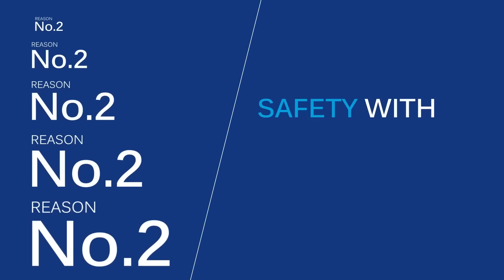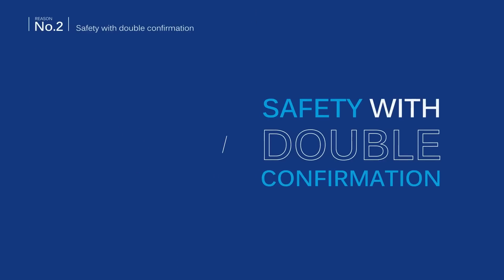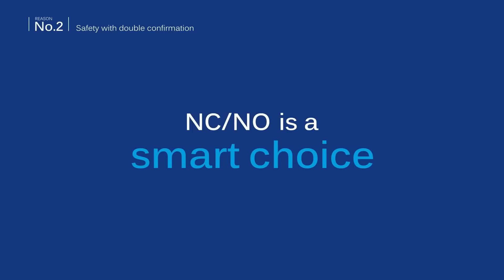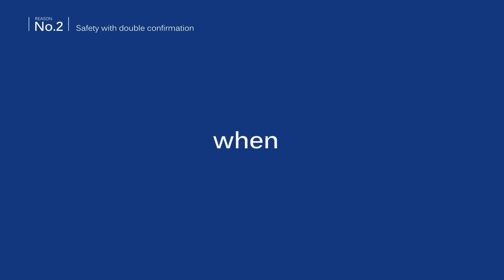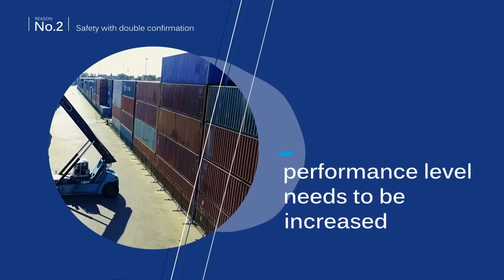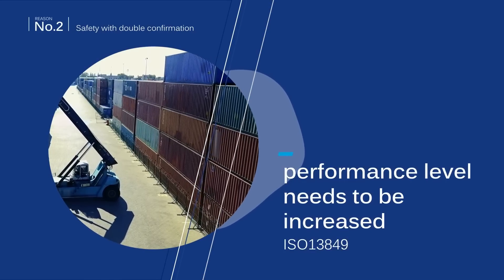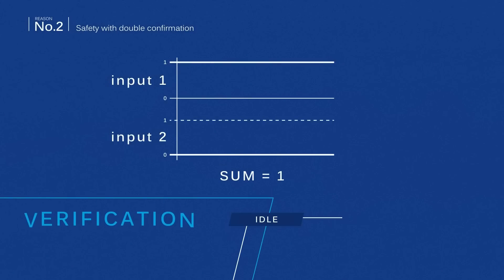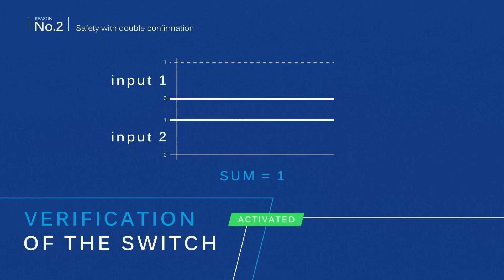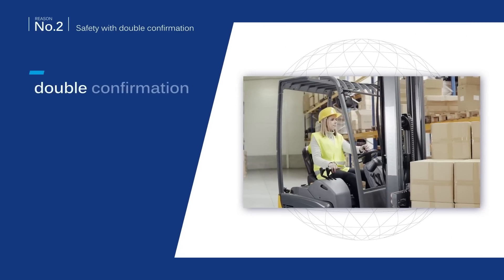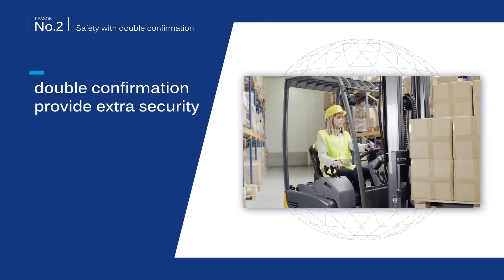Number two: safety with double confirmation. NC-NO is a smart choice in safety-critical applications and when the performance level of your machine needs to be increased in accordance with ISO 13849. This is because NC-NO function allows the verification of the switch while also making a new contact. This double confirmation can provide extra security.